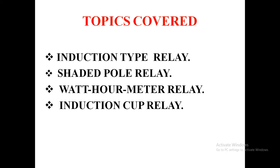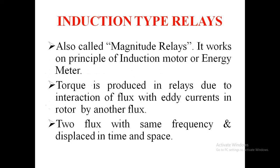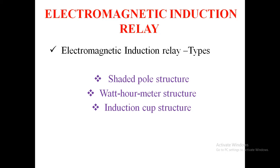These are the topics we are going to cover: the shaded pole relay, watt-meter relay, and induction cup type relay. In this induction type relay, it is also called a magnitude relay, which works on the principle of induction motor or energy meter. The torque produced in this relay is due to the interaction of flux in the rotor by another flux — two fluxes with the same frequency, displaced in time and space.